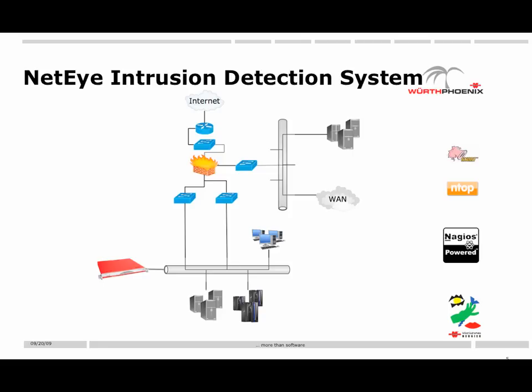SNORT performs protocol analysis, content searching and matching, and is commonly used to actively block or passively detect a variety of attacks and probes, such as buffer overflows, stealth port scans, web application attacks, SMB probes, and OS fingerprinting attempts, amongst other features.